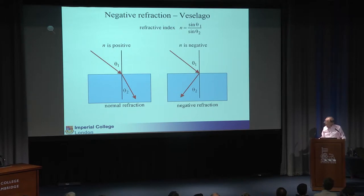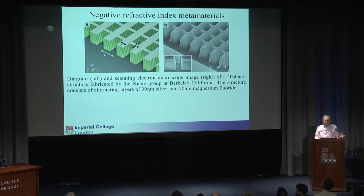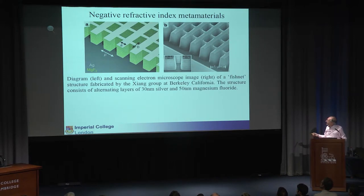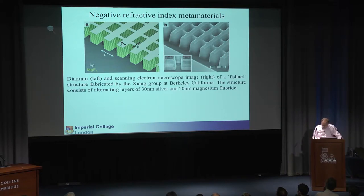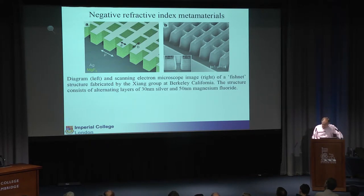Just one more slide on metamaterials. The first metamaterial was made to work with radar waves, but people have been making them work with optical devices. This is a metamaterial from the Zhang Group in Berkeley, California, consisting of very thin layers — 30 nanometers of silver, 50 nanometers of an insulating dielectric — stacked together with a series of holes cut in them. That structure also creates a negative refractive index, but this time at optical frequencies.